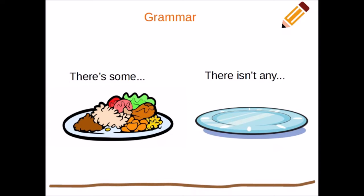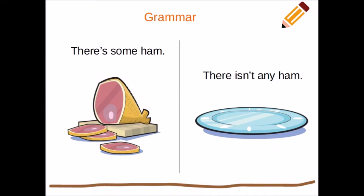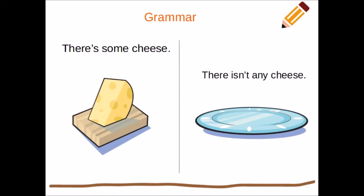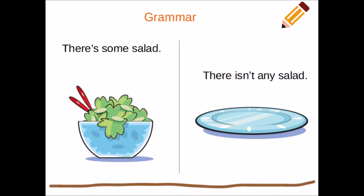So let's go through all the vocabulary words and we'll see. There's some ham. There isn't any ham — there's no ham on the plate. There's some cheese. There isn't any cheese — zero cheese on the plate. We have some cheese on the left. There's some salad. There isn't any salad. So we can see the difference between the two — here we do have salad, and on the right there isn't any. There's zero pieces of salad on that plate.